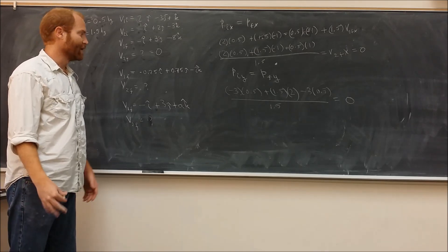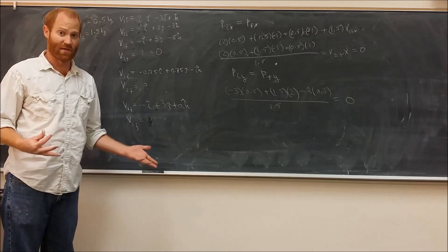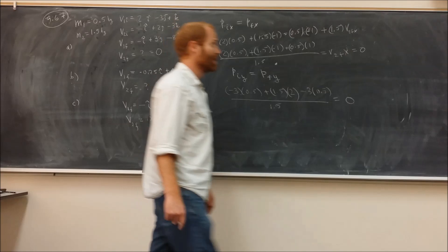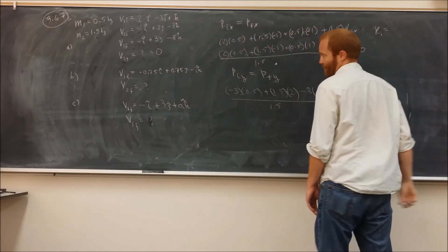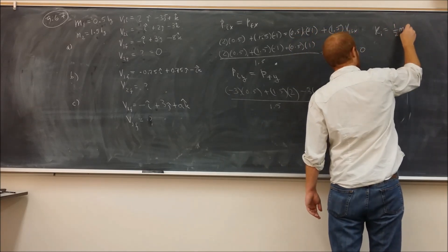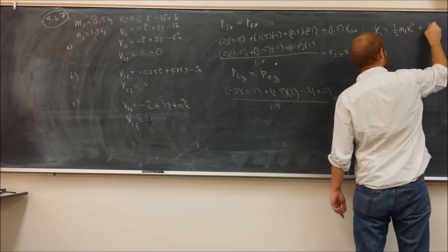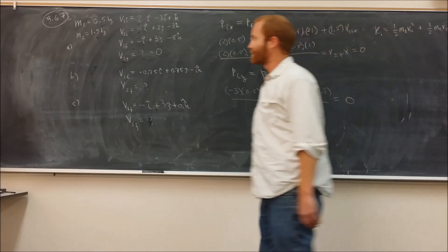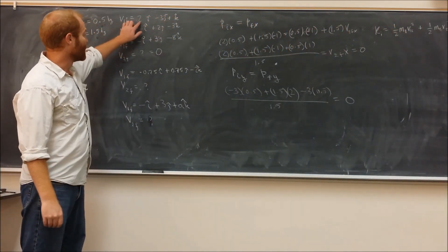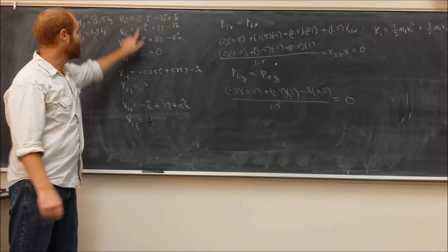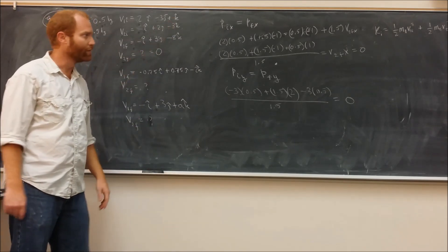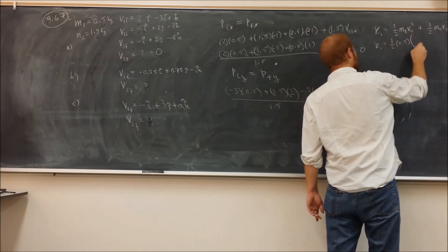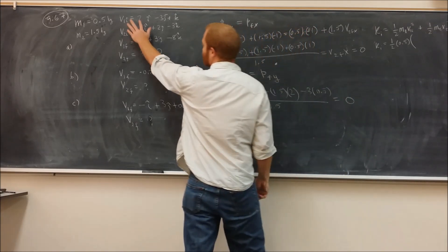They also want us to figure out what kind of collision it is basically. And in order to figure that out, we need to calculate the initial kinetic energy and then calculate the final kinetic energy. The initial kinetic energy for the system is going to be 0.5 m1 v squared plus 0.5 m2 v squared. The thing to note here is that in order to square these velocities, for this one to square it, what you do is you take this squared plus this squared plus this squared. So it's going to be 2 squared, which is 4, plus 3 squared, which is 9, plus 1 squared, which is 1. So what we're going to have basically is this. Ki is 0.5 times 0.5 times 4 plus 9 plus 1.